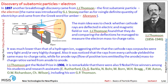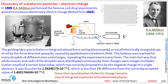It is remarkable that another record is held by Thomson: nine of his PhD students or research assistants later received the Nobel Prize, including his own son. The charge of the electron was measured in 1909 in the famous oil drop experiment by Robert Millikan, an American physicist.